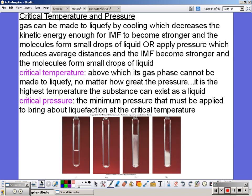Critical temperature and pressure. Gas can be made to liquefy by cooling, which decreases the kinetic energy enough for intermolecular force to become stronger, and the molecules form small drops of liquid, or apply pressure, which reduces the average distance, and the intermolecular force becomes stronger, and the molecules form small drops of liquid.